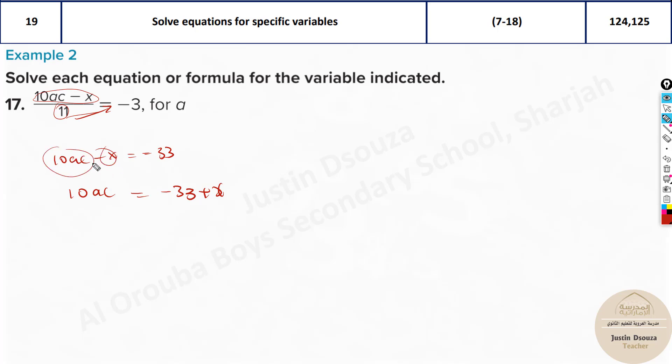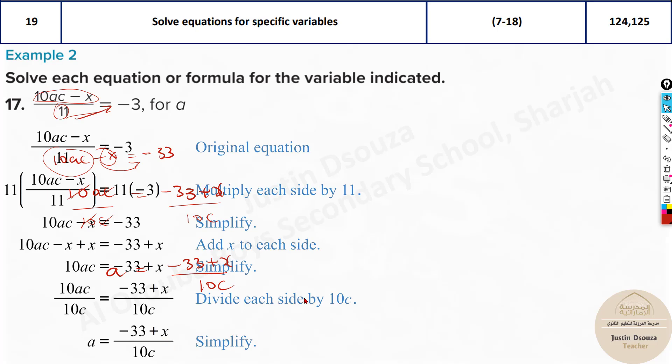It's joined together. Now, when you see over here, the numerators are together. Denominators separate goes to the other side. Here, this term goes to the other side. Now, then, all our multiplication, you can just divide. So it will be division by 10C, 10C. So the answer will be A equals, because 10 and C cancels, it will be minus 33 plus X divided by 10C. So this must be the answer. And that's the answer, yes.